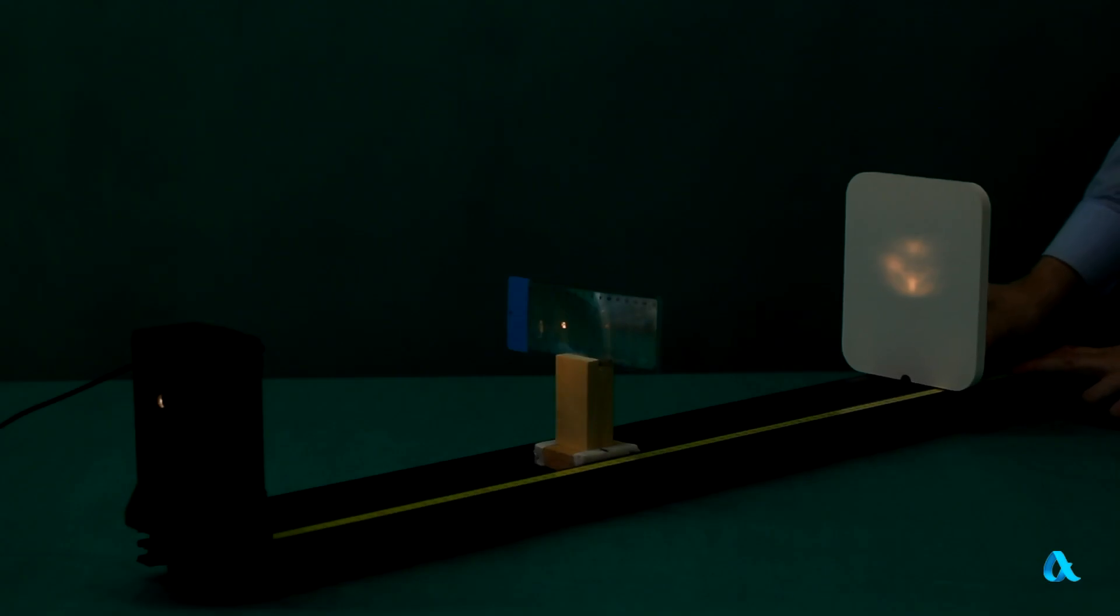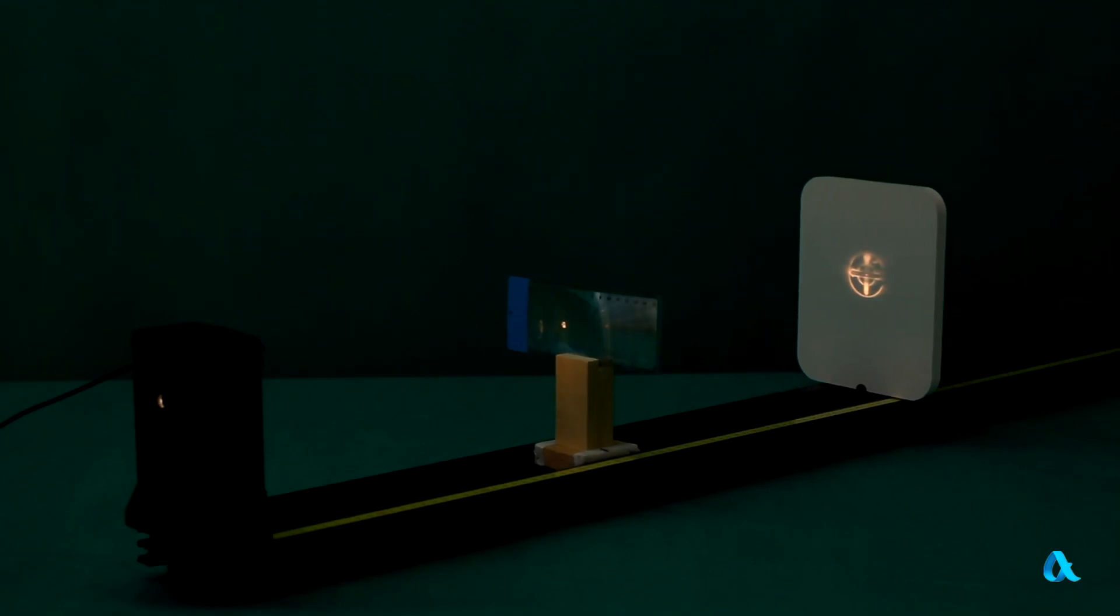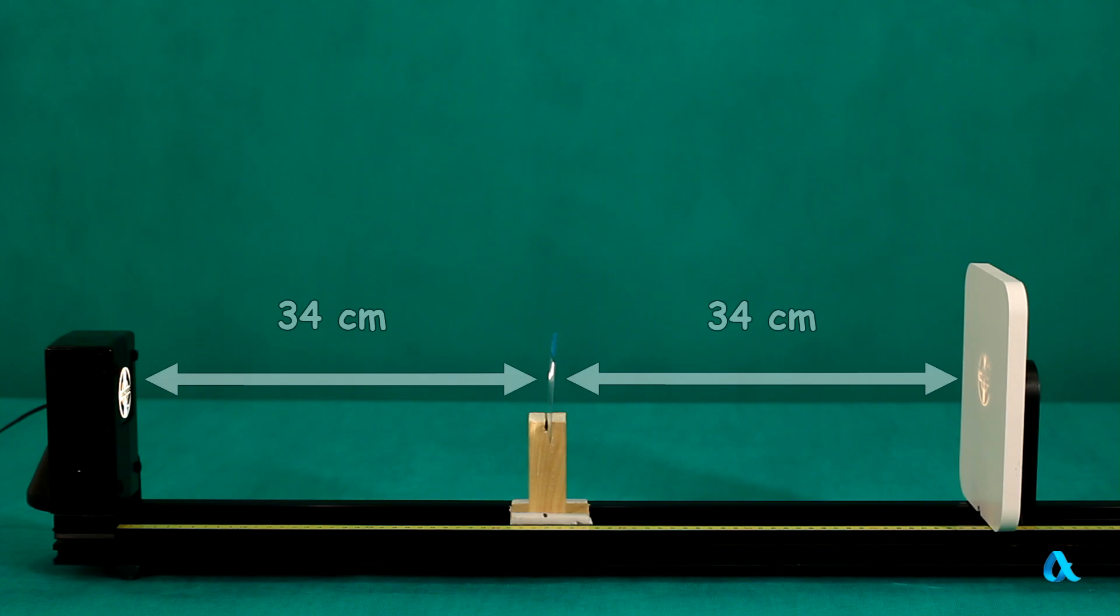To measure the focal distance of the lens, we create the source image on the screen. The distance from the source to the lens and from the lens to the screen now equals 34 cm. Let's use the thin lens formula. The focal distance of our lens is 17 cm.